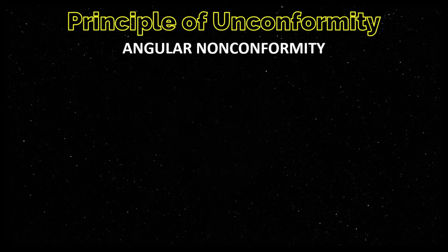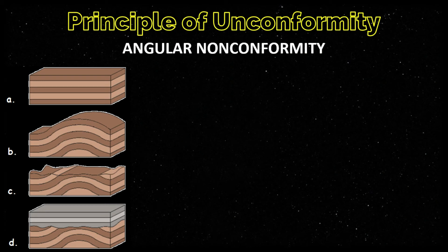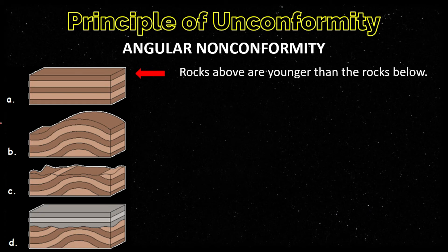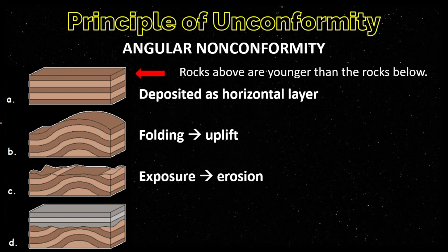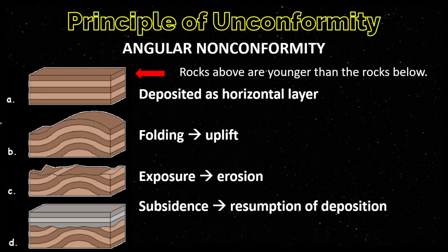This figure illustrates the sequence of events that can lead to the formation of an angular unconformity. The horizontally layered sedimentary unit on top is separated from the underlying folded rocks by an unconformity, meaning rocks above are younger than rocks below. In figure A, sediments are initially deposited as horizontal layers. In figure B, the rock layers are subjected to folding, associated with uplift. C shows the exposure of folded rock layers to the surface, resulting in erosion. Finally, the folded and eroded rocks undergo subsidence, allowing the resumption of deposition.